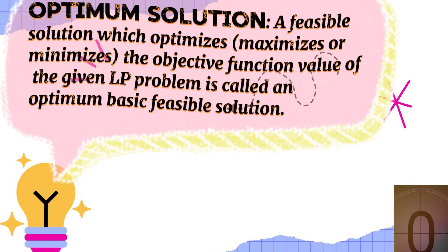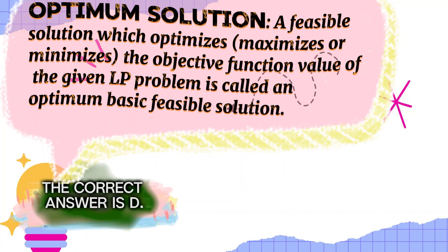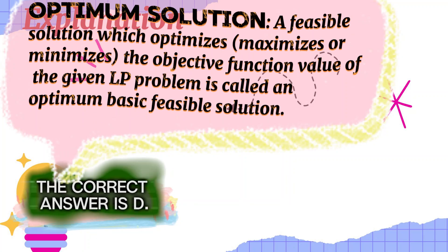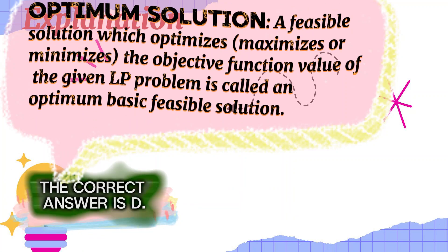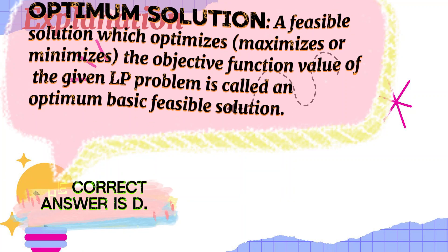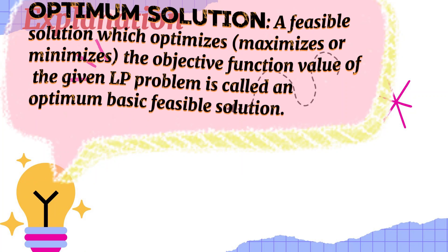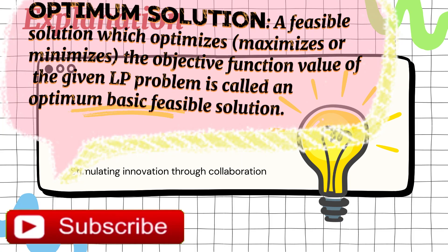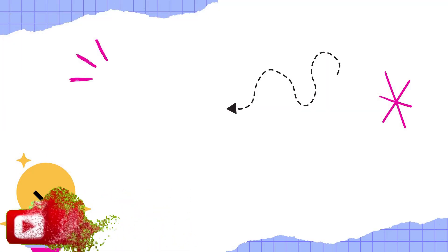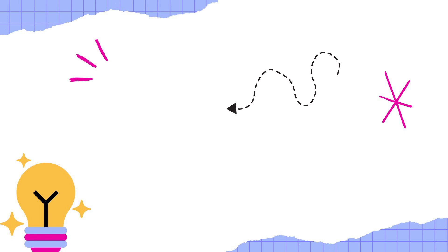Optimum solution: a feasible solution which optimizes — maximizes or minimizes — the objective function value of the given LP problem, is called an optimum basic feasible solution.